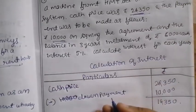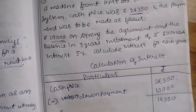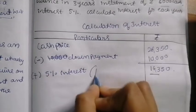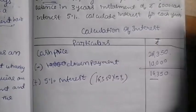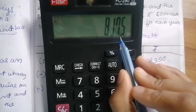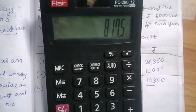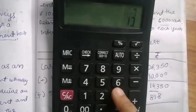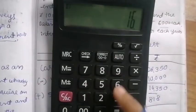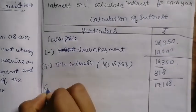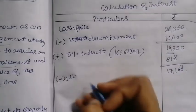Now we have 3 installments with 5% interest. So 16,350 into 5% — we calculate 16,350 multiplied by 5% — we get 817.5, which rounds to 818. So 16,350 plus 818 gives us 17,168. Then we subtract the first year installment from 17,168.